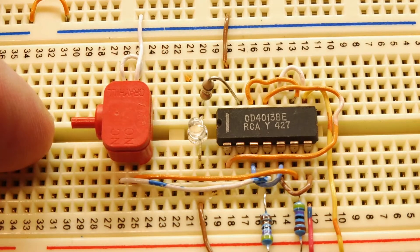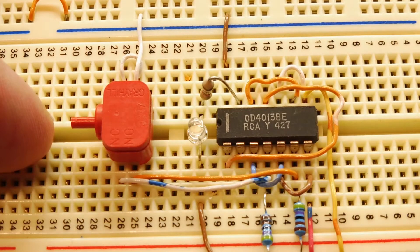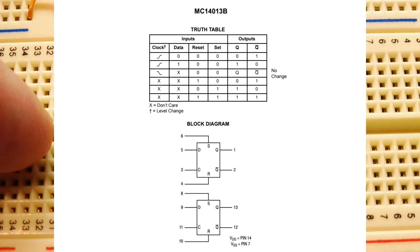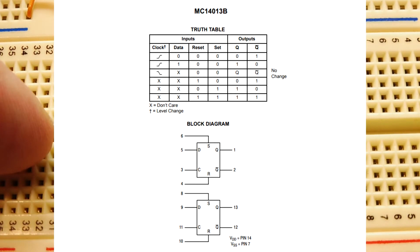These are positive edge-triggered flip-flops, and they run on 3.3 volts to 15 volts. Now inside the 4013 package, there are actually two independent flip-flops. Each one has their own independent set and reset line, so we can configure them as RS flip-flops. They have a D and clock input, and they have a Q and a Q-bar output.